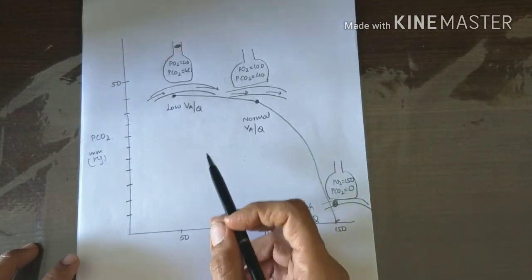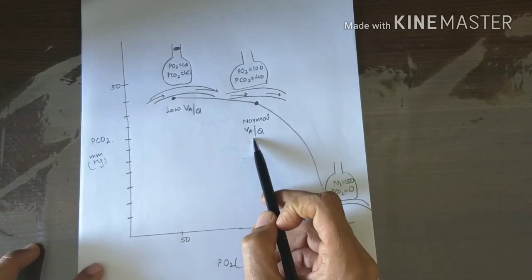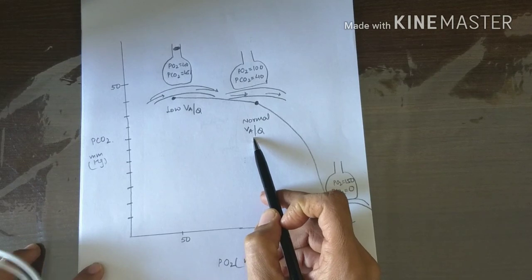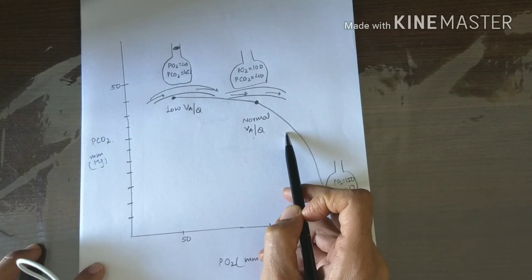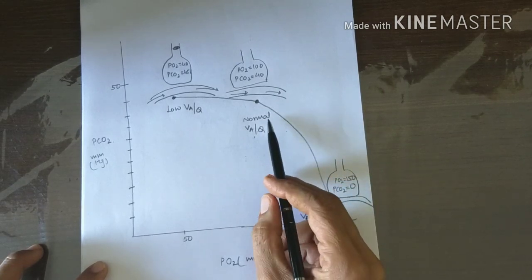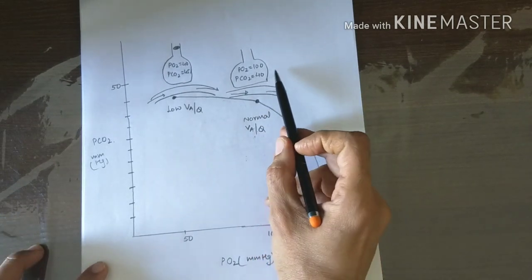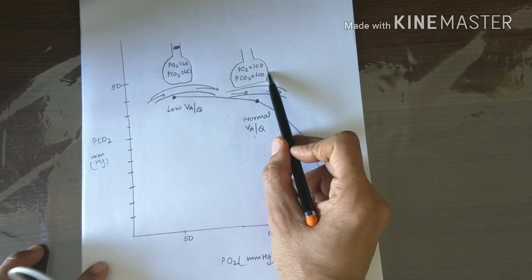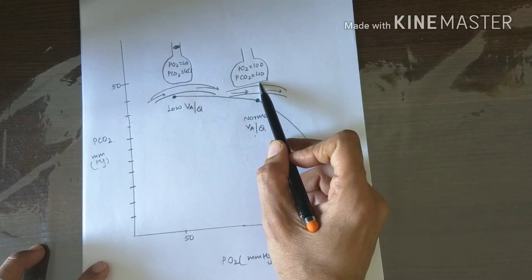Effects of alteration in ventilation perfusion ratio: when V/Q is normal, both ventilation and perfusion are normal, so exchange of oxygen and carbon dioxide across the respiratory membrane is nearly optimum. Alveolar PO₂ is normal at about 104 mmHg and partial pressure of CO₂ in alveoli is also 40 mmHg.